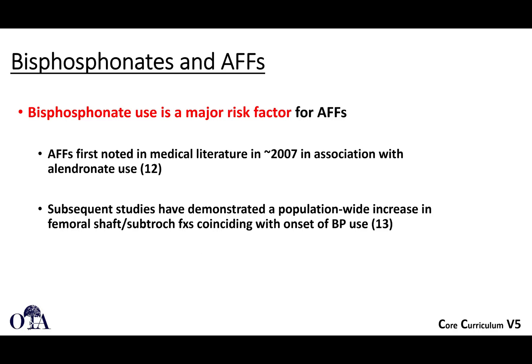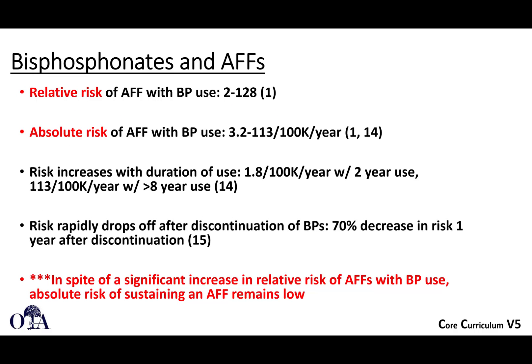Bisphosphonate use is also a major risk factor for the development of atypical femur fractures. This was something we started to recognize in the late 2000s with prolonged alendronate use, and subsequent studies demonstrated a population-wide increase in these fractures coinciding with widespread bisphosphonate use. The risk increases with duration of use — with two-year use you see one level of risk, with eight-year use that number goes up substantially — and the risk drops off after discontinuation.